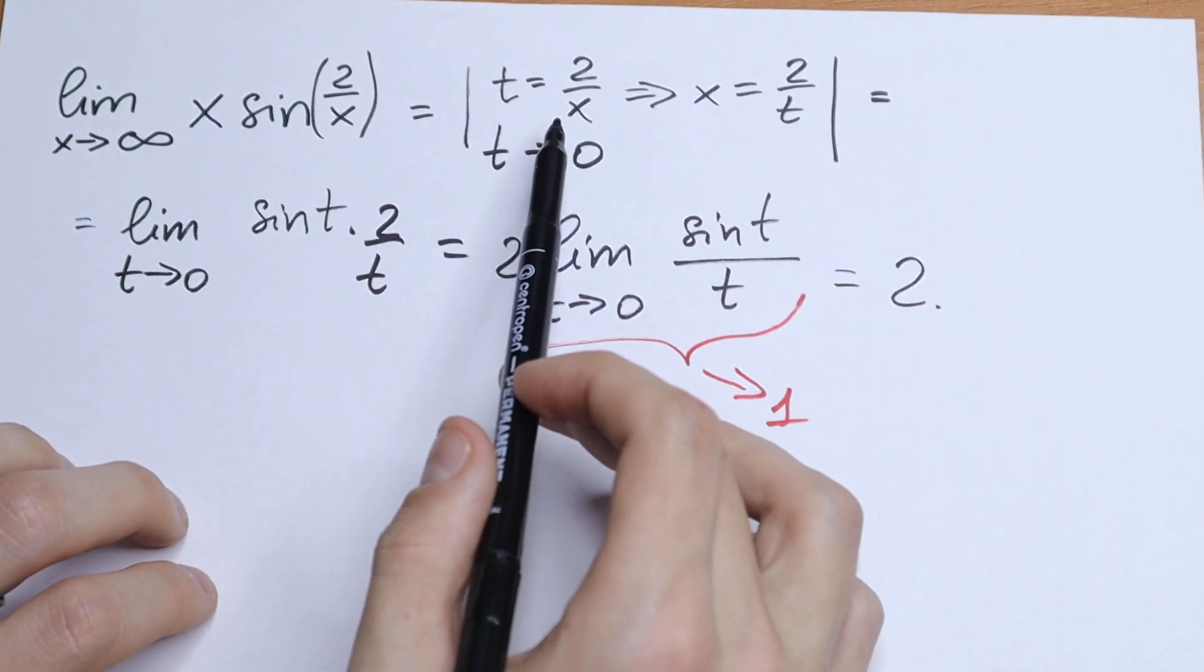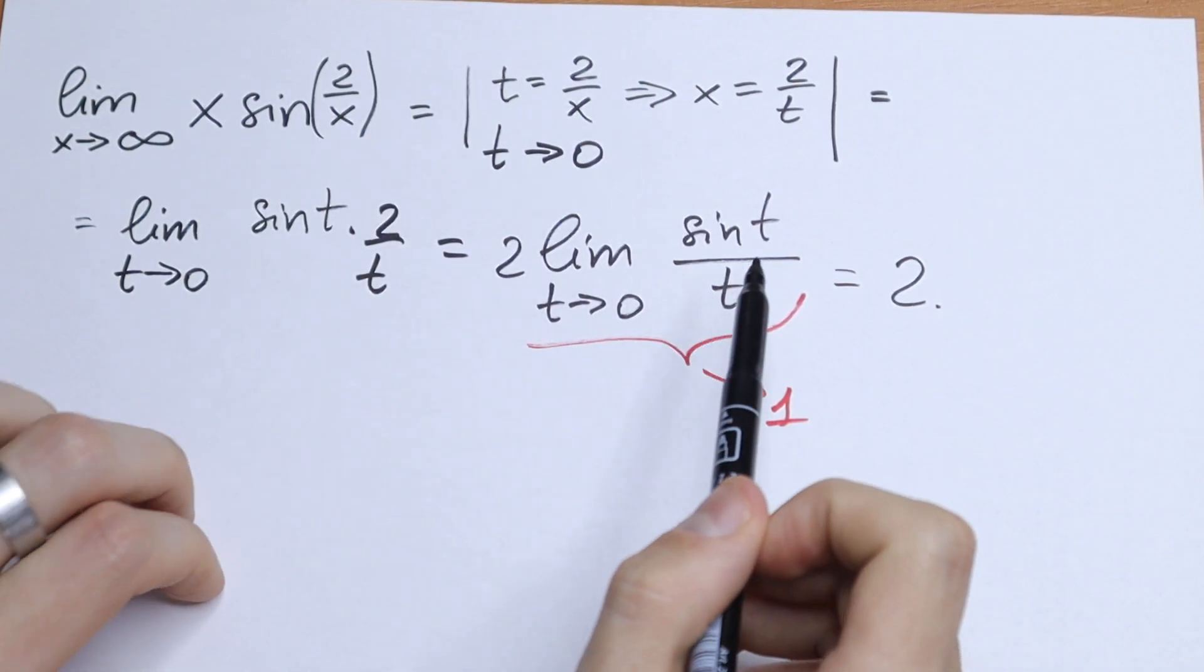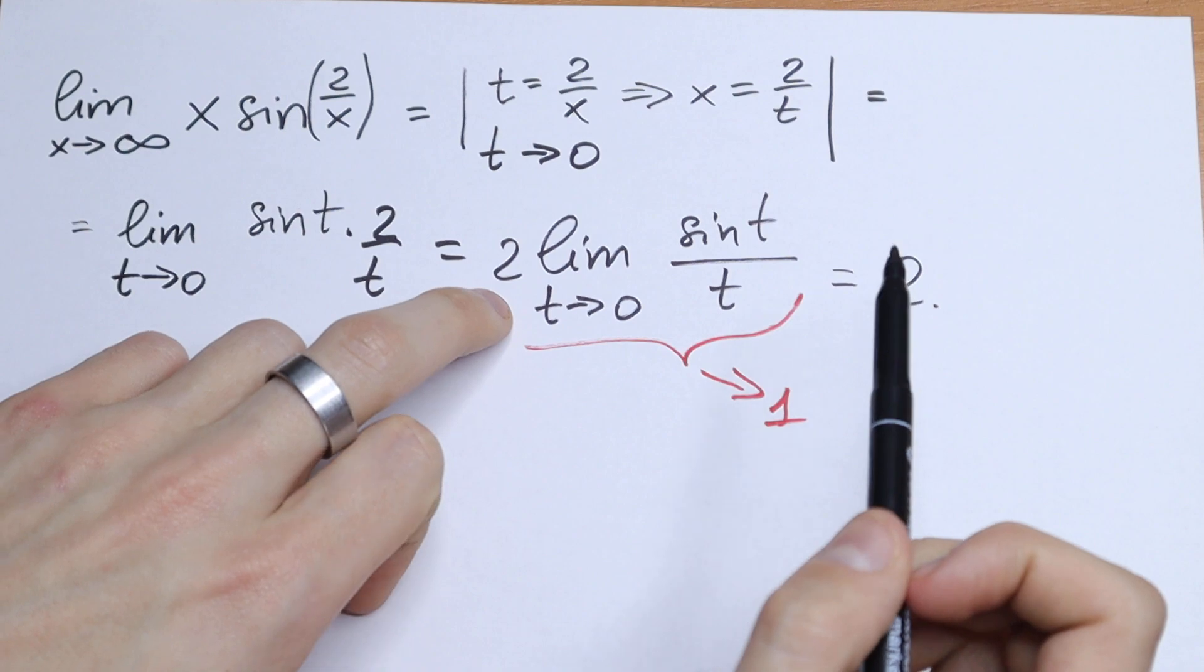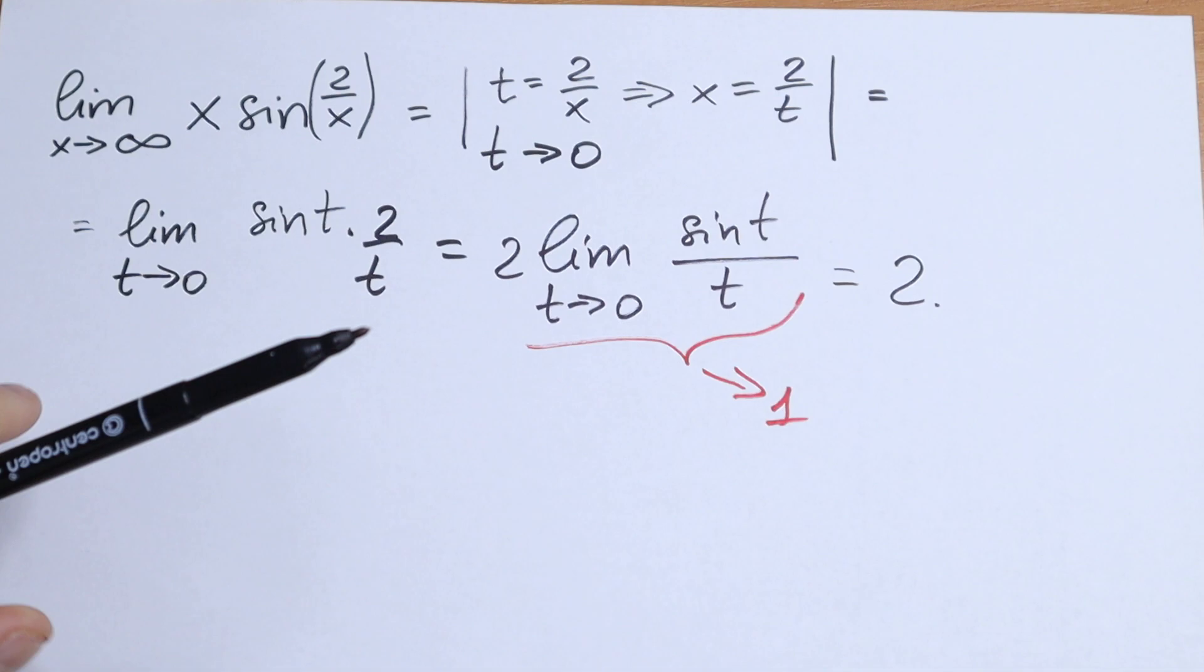Really good case to use a substitution right here. And this is like a classic case. So we will have 2 times 1 equals 2. And 2 is our answer to this limit.